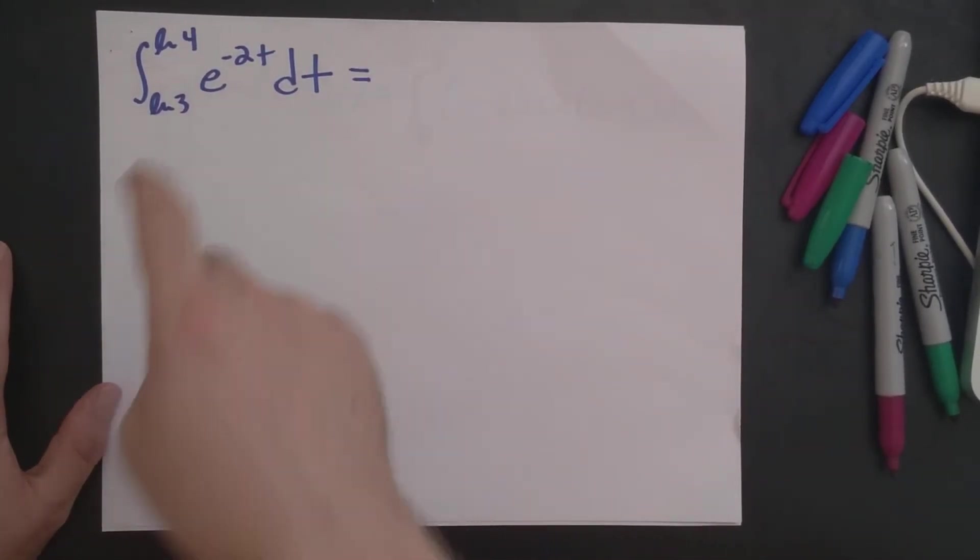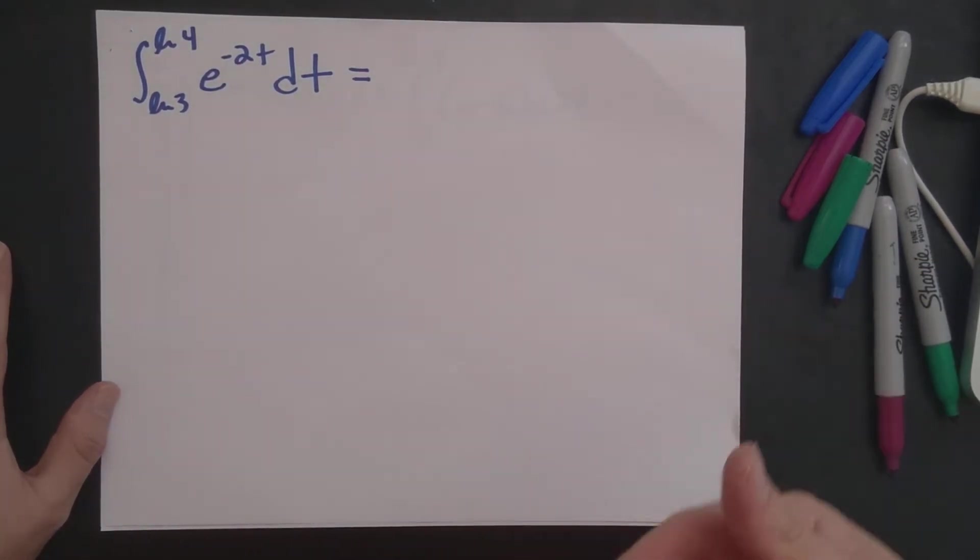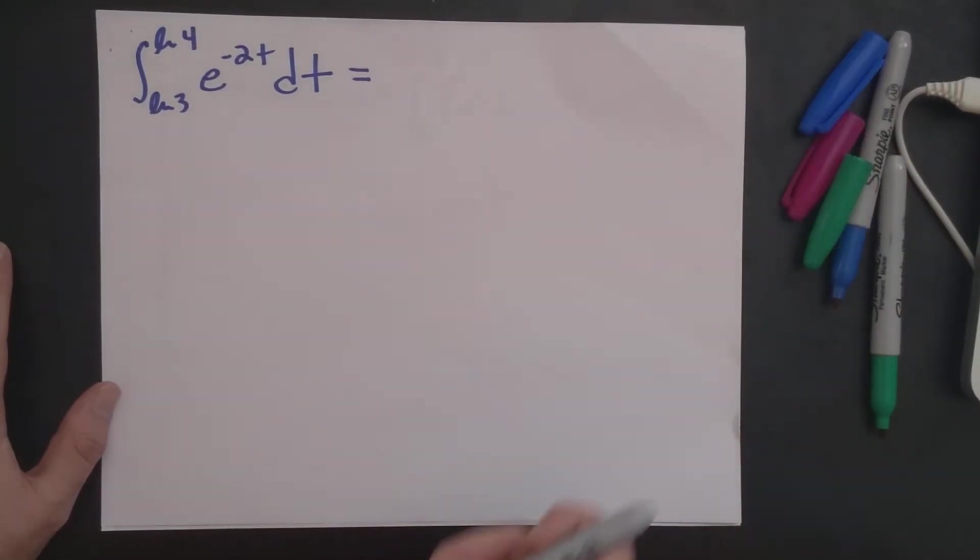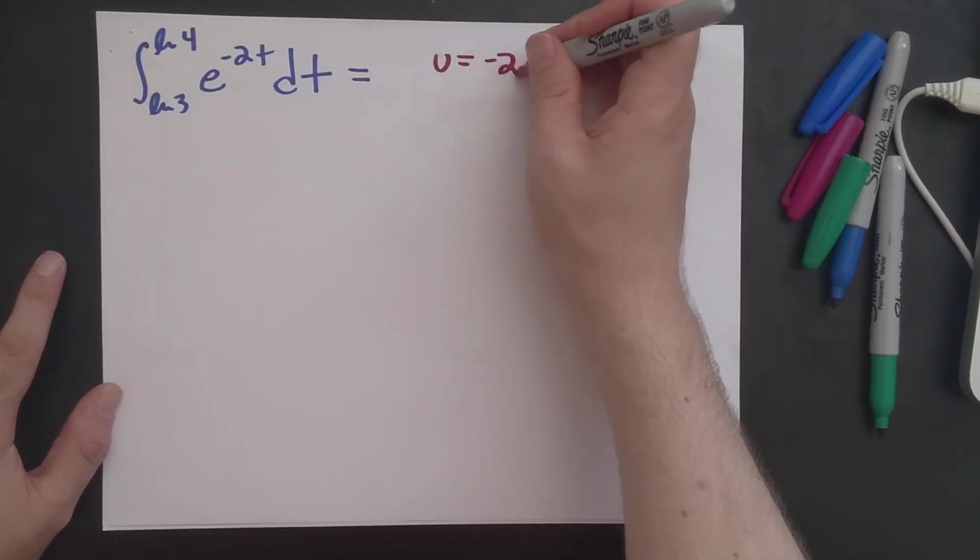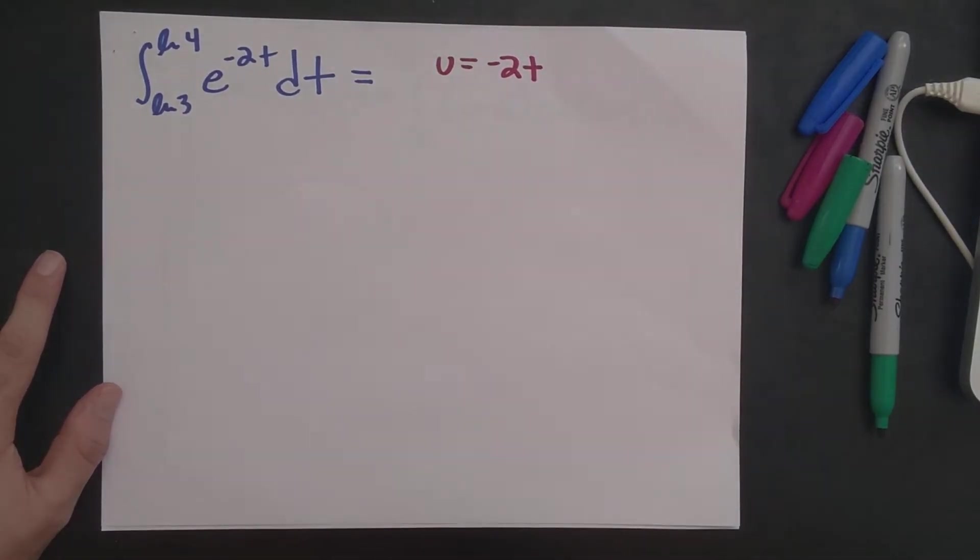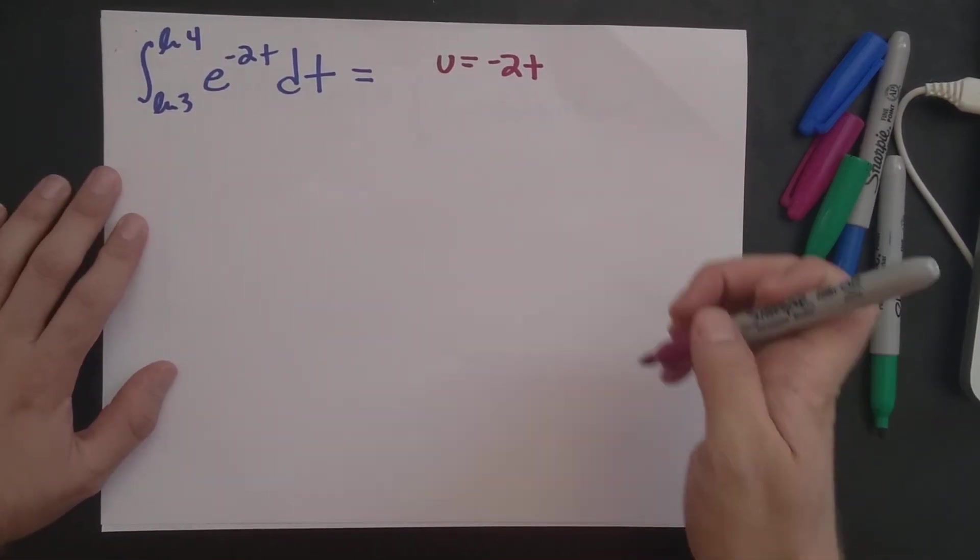So the first one that had an error in it is going to be the integral from natural log 3 to natural log of 4 of e to the minus 2t dt. It's a multiple choice question that gave you four different choices for what this is equal to after you did a substitution. When you did a substitution, it's pretty clear from context from the choices that you had to make the substitution u is equal to minus 2t.